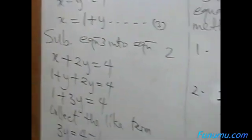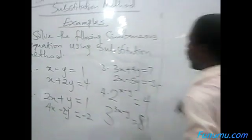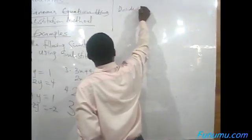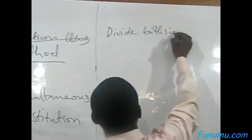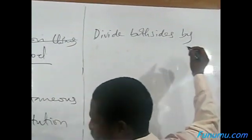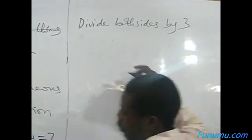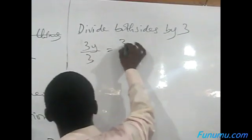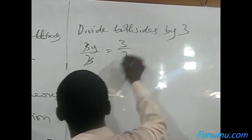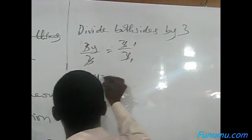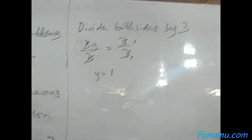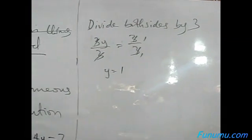The last thing you want to do is to remove the coefficient. That is, divide both sides by 3. We have 3y all over 3 equal to 3 all over 3. The 3 cancels the 3, giving y equal to 1. Therefore, y equal to 1.